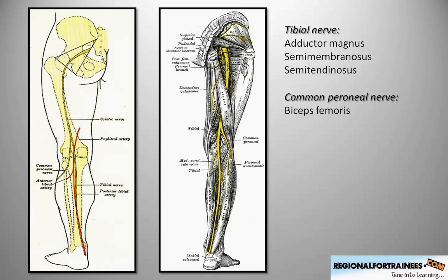The common peroneal nerve courses downwards and laterally around the neck of the fibula, dividing into superficial and deep components as it approaches the peroneus longus muscle. The tibial nerve courses downwards under the calf muscles to eventually emerge slightly medially behind the medial malleolus, where it divides into its various branches.